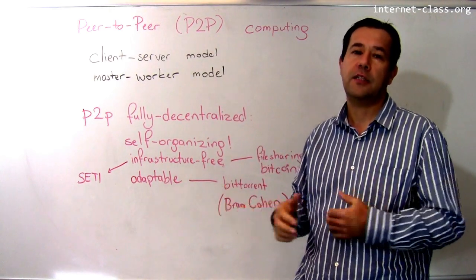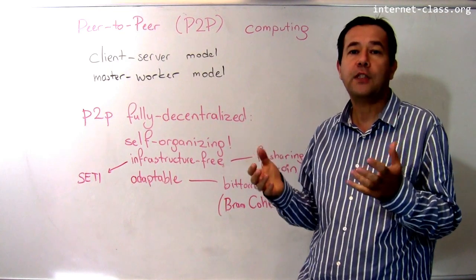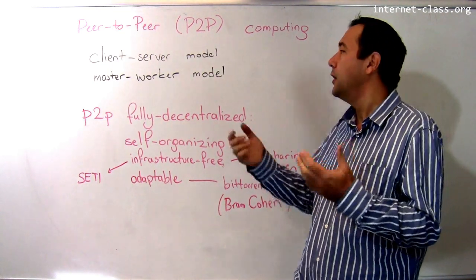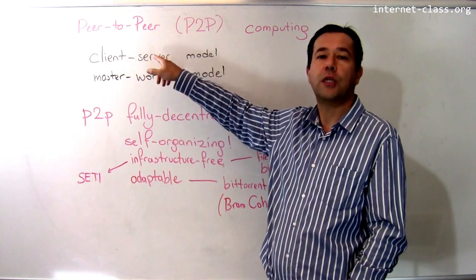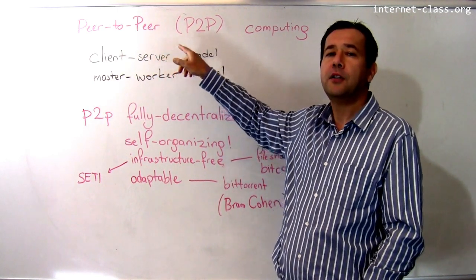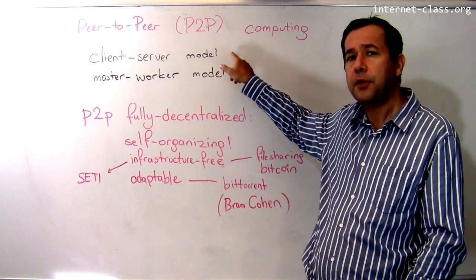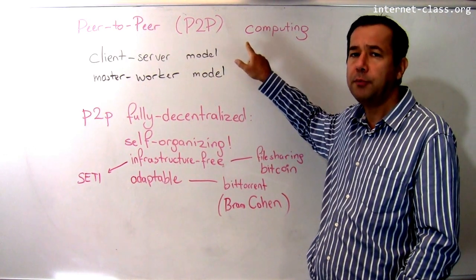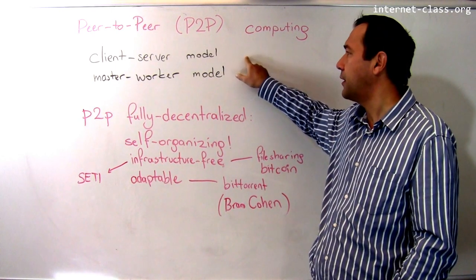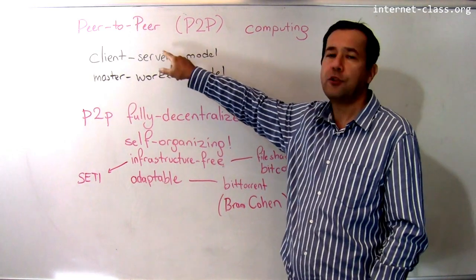There is a server—a powerful server—that waits for clients to connect. Clients send requests to the server, the server does the computation and replies. This is a very simple model. Since it's simple, we know how to manage it, how to make it efficient and cost-effective. What if one server is not enough?